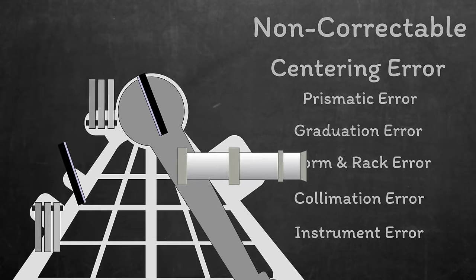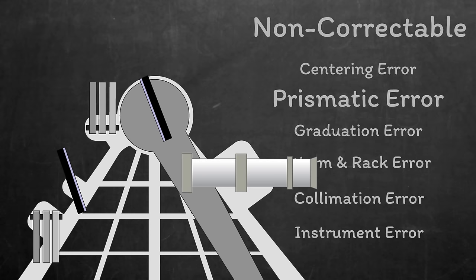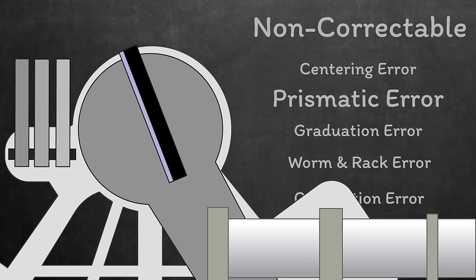Centering error, this is when the pivot point of the index arm is not perfectly aligned with the centre of the instrument. Prismatic error is when the two planes of the mirrors, or glass planes, are not parallel to each other.